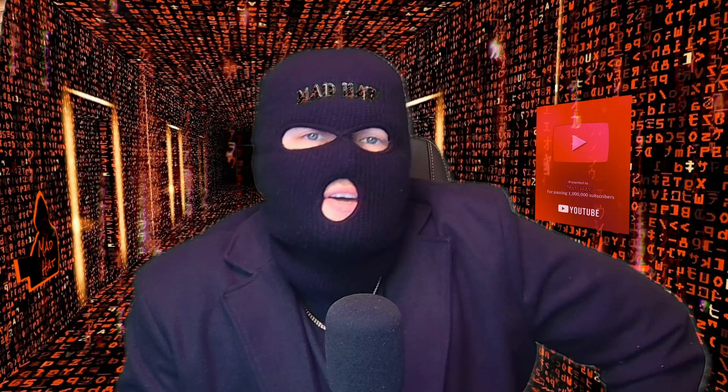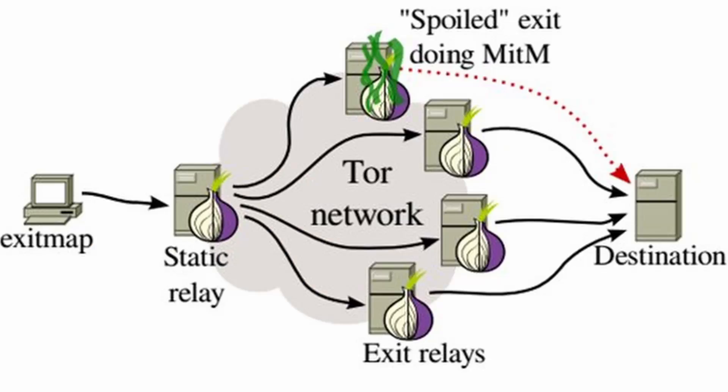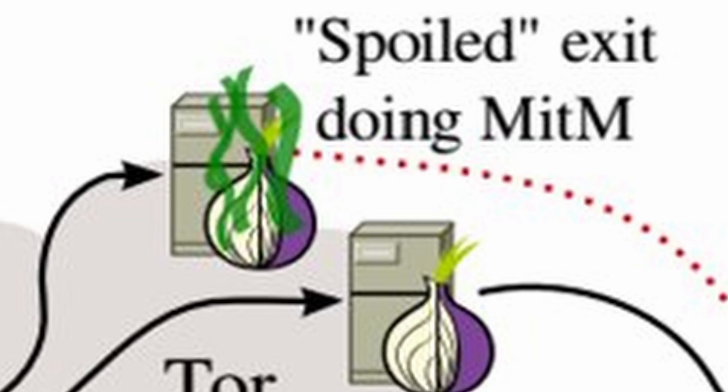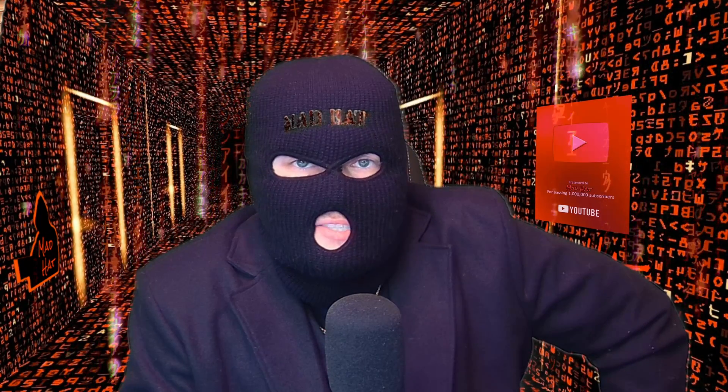For that reason, Tor is more private as there are no logs — simply three nodes that push your traffic to the site you're trying to visit. However, it is entirely possible that the nodes have been compromised and can expose your data. And if that's the case, your browsing history could be reconstructed and routed back to you.